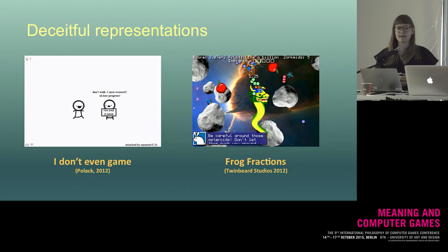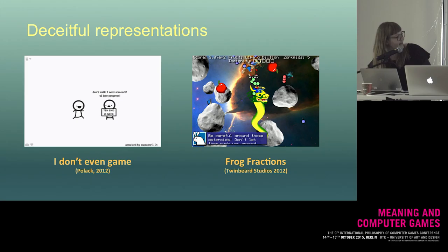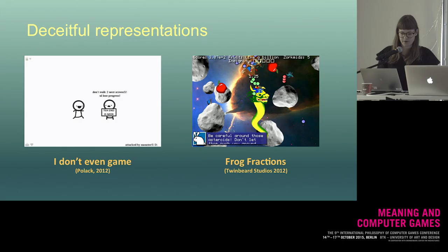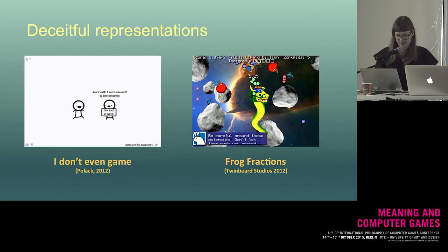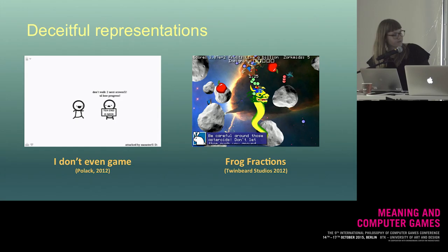The picture on the left is from the game 'I Don't Even Game,' a simple side-scrolling game where an NPC warns the player that if she walks further, she will lose all progress. Unfortunately, the player has no option but to move to the right — that is the only thing she can do at this stage. So she can only observe the warning and then still move right, or simply stop playing. Luckily, this turns out not to be true; the player has not lost any progress and is actually progressing the game just fine.